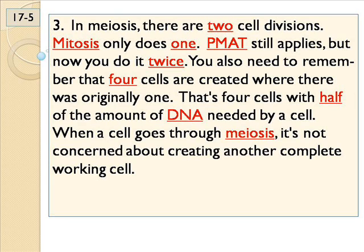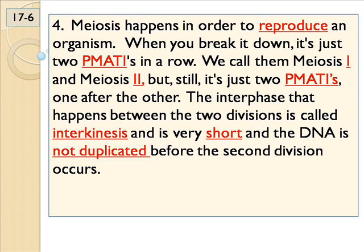When you first get conceived and you're growing inside your mama, it goes two to four to eight to sixteen — they divide and you keep doubling until finally you get to be a mass. Meiosis is not about creating another cell like the one you started with; it's all about making a gamete — sperm or egg. It's all about reproduction.